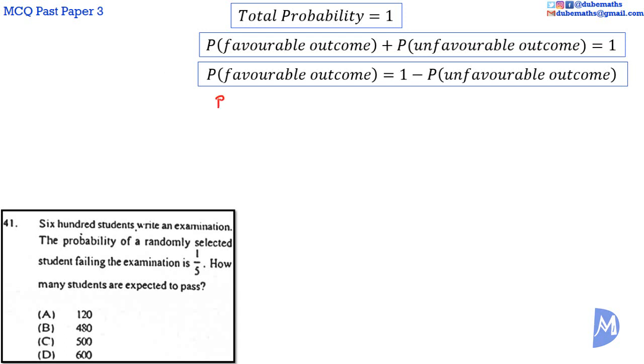Thus, the probability of passing the exam is equal to 1 minus the probability of failing. We are given that the probability of a randomly selected student failing the exam is 1 fifth. So the probability that a randomly selected student will pass the exam is equal to 1 minus 1 fifth.